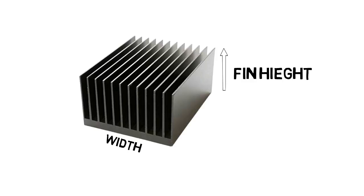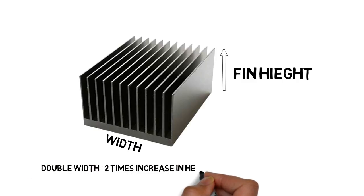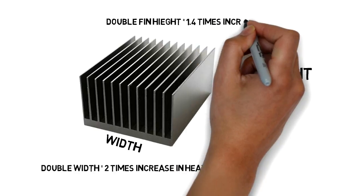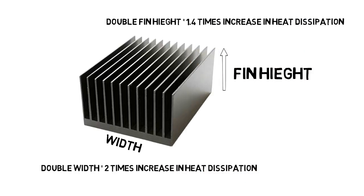So if we increase the width of the heat sink by a factor of two, the heat dissipation capability also increases by a factor of two. Whereas if we double the length of the fin, then the heat dissipation capability doesn't double. It only increases by a factor of 1.4.